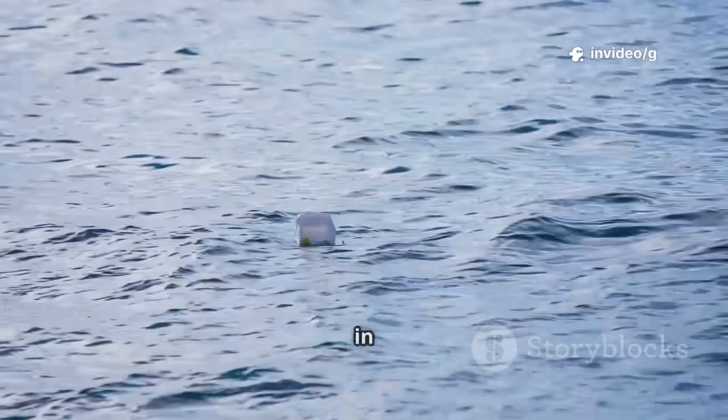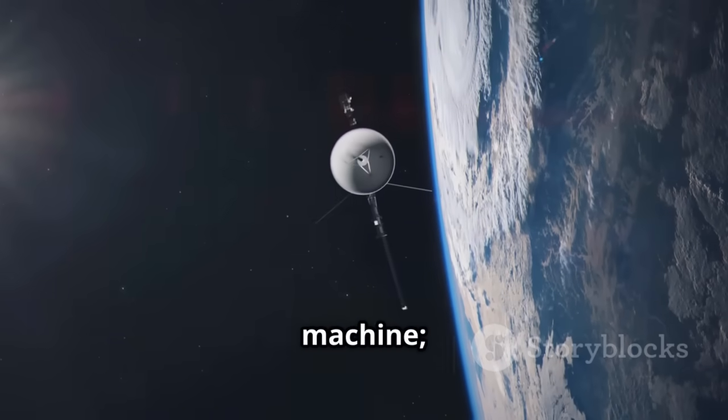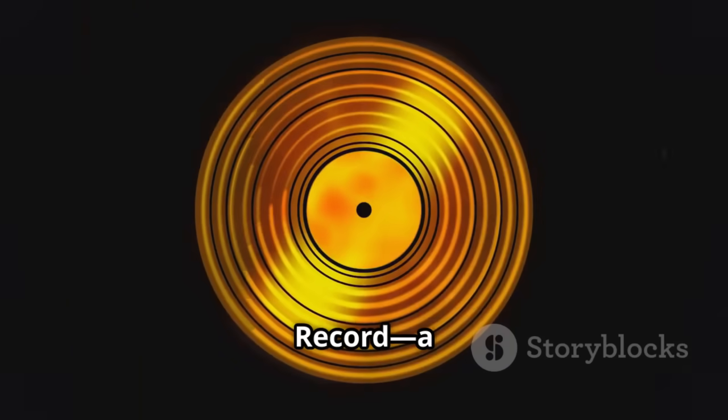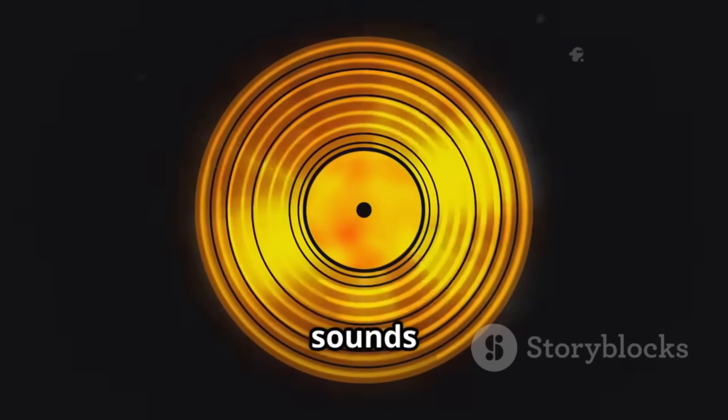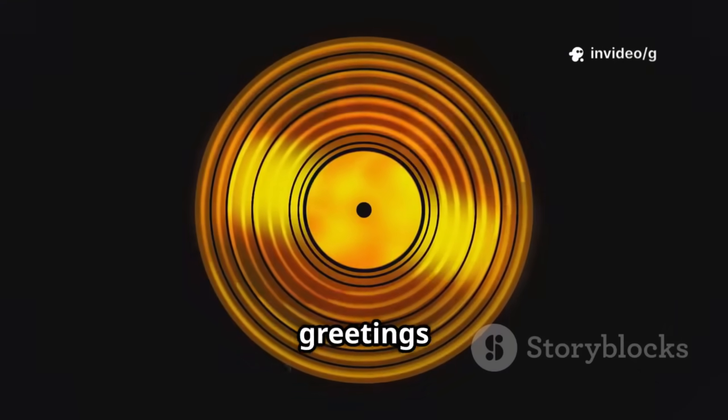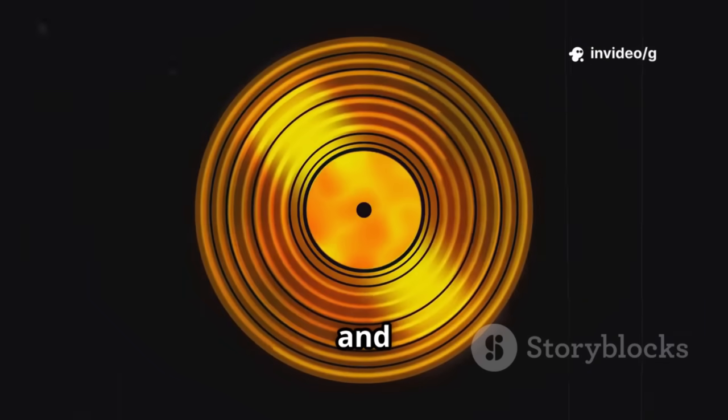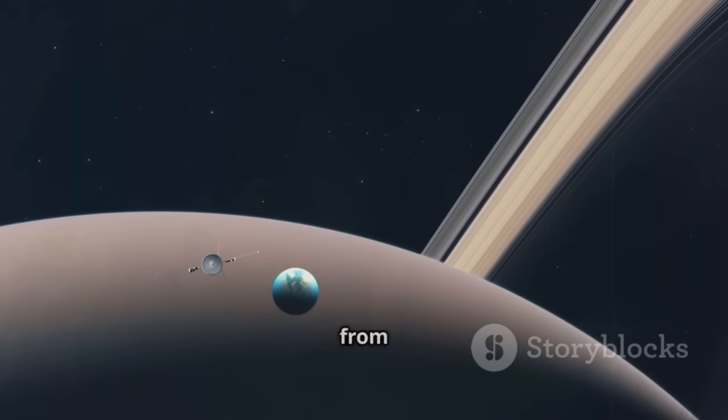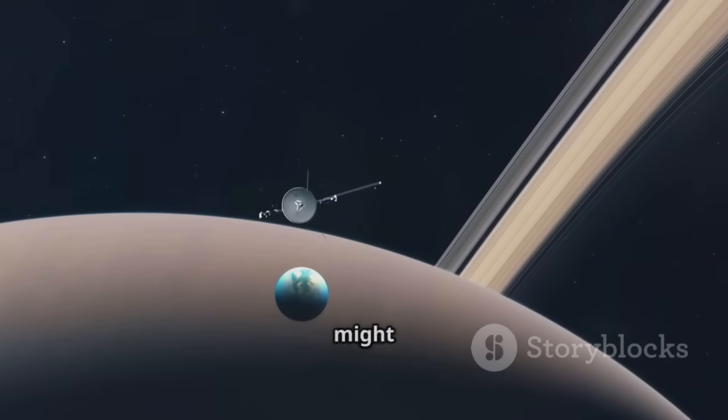Think of it as a message in a bottle, cast into the cosmic ocean. Voyager 1 isn't just a machine, it's a vessel of humanity. Attached to its side is the Golden Record, a gold-plated disk with sounds and images from Earth, greetings in 55 languages, and the sounds of nature. It's a cosmic handshake, a hello from Earth to any intelligent life that might find it.